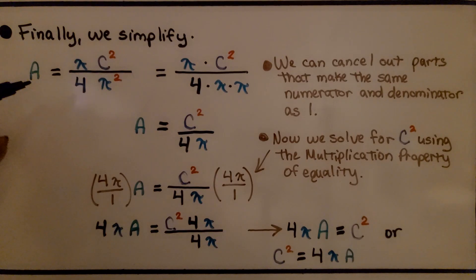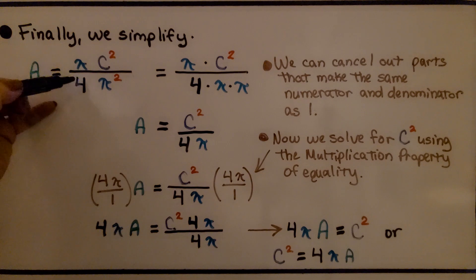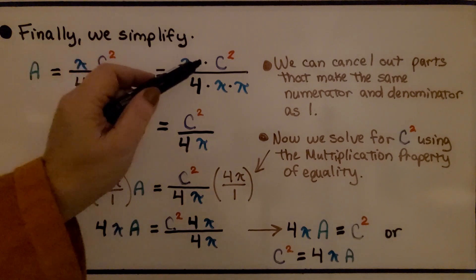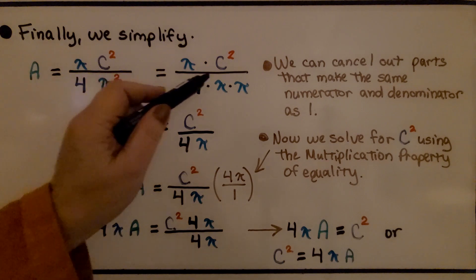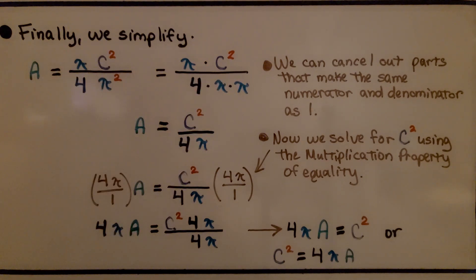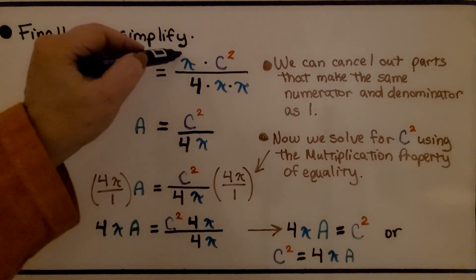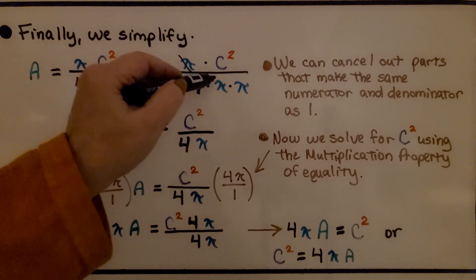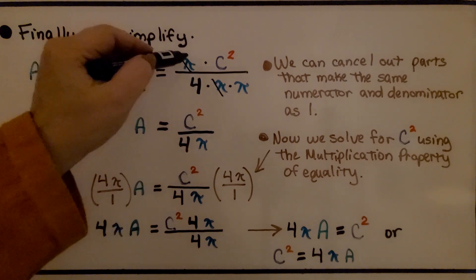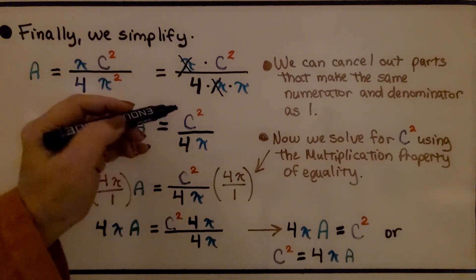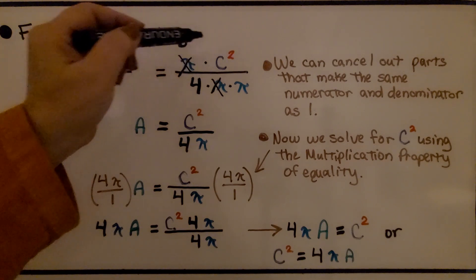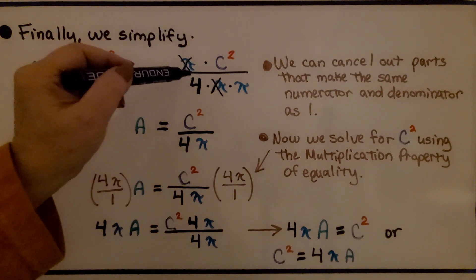Finally, we simplify. We have π times C² over 4π². We can cancel out the π in the numerator with one π in the denominator — π over π equals 1 — leaving us with C² divided by 4π. So the area of a circle equals the circumference squared divided by 4π.